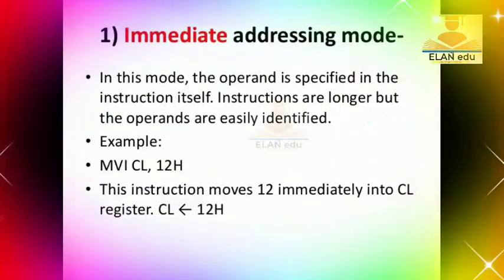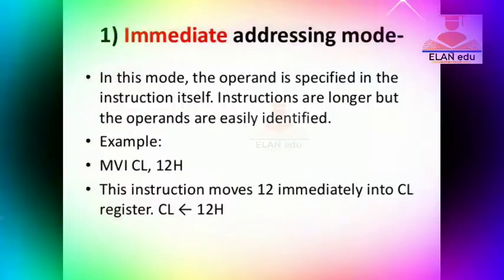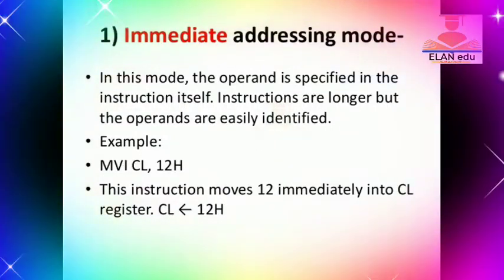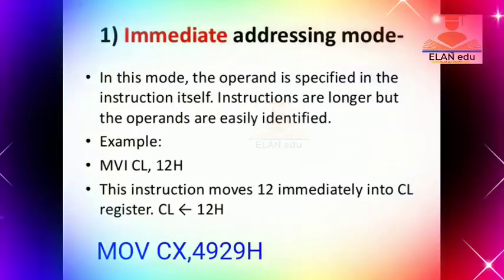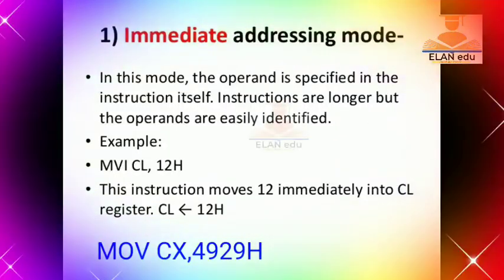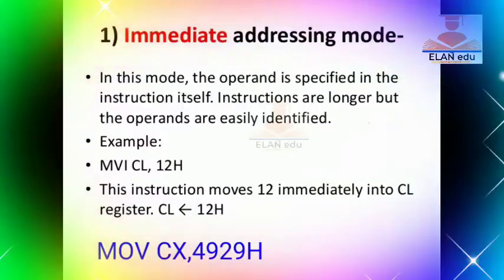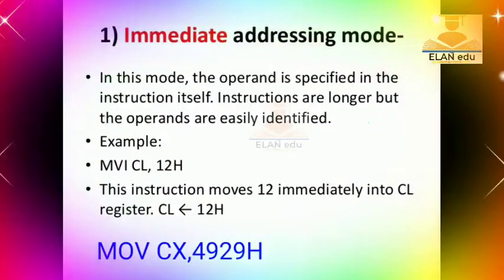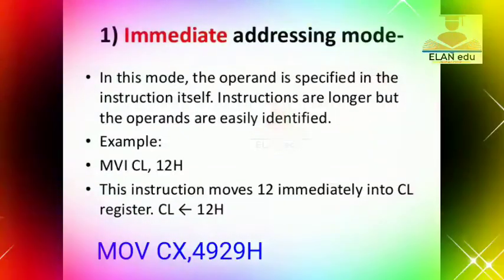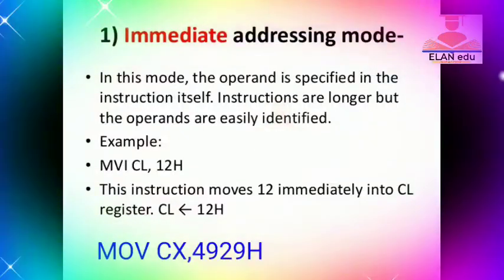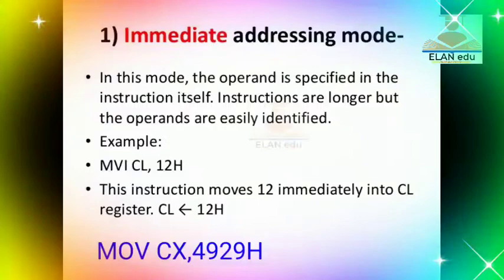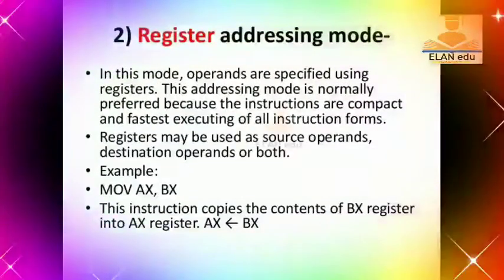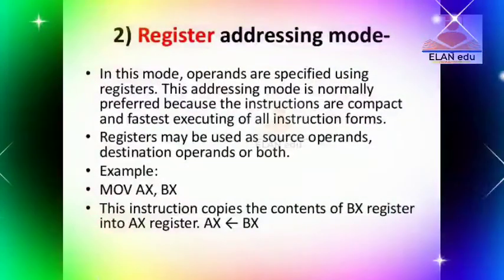Here is another example: MOV CX, 4929H. That is a hexadecimal value. CX is the 16-bit register and 4929H is 16-bit data. We will move the data into CX. This is an example of Immediate Addressing Mode.